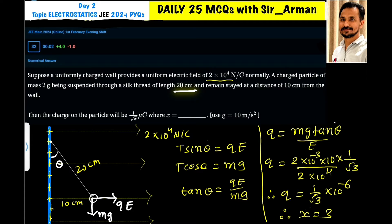Here we have a silk thread whose length is 20 centimeters and a charged particle is suspended here whose mass is 2 grams and remains at a distance of 10 centimeters from the wall.